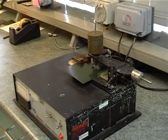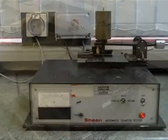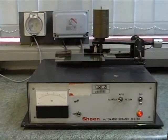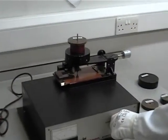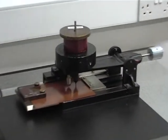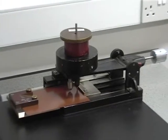EN13523 Part 12 is used to assess the resistance to scratching of pre-painted metal. A special piece of equipment is used to ensure that a needle is dragged across the test specimen with a uniform applied force.